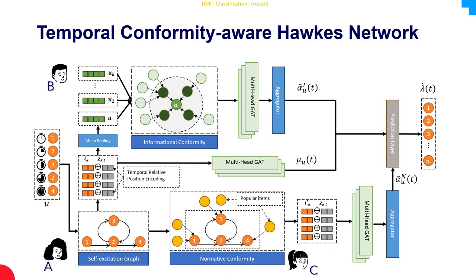This is the main structure of our model — Temporal Conformity-Aware Hawkes Network — including three modules: modeling users' interest and conformity, and finally producing recommendations. For a deeper understanding, we encourage you to explore the details outlined in our research paper. Thanks for your attention.